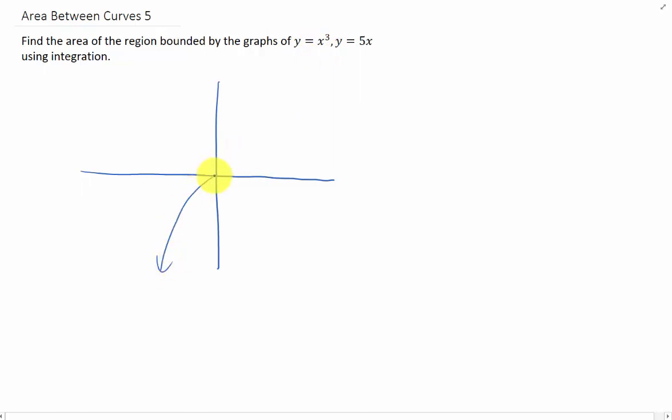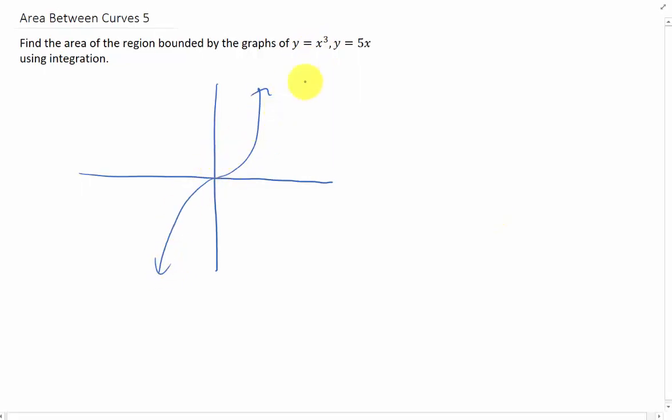y equals x cubed looks something like this. And as always, not the best graph, but y equals 5x is a straight line with the slope of 5.